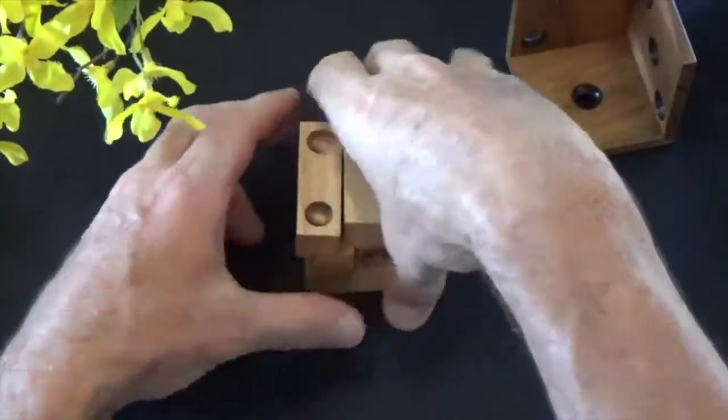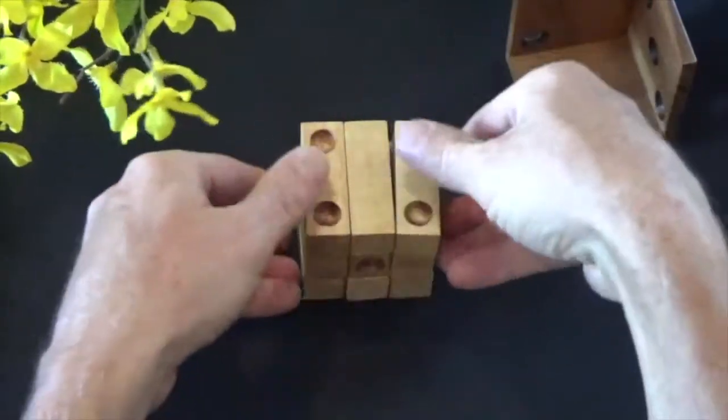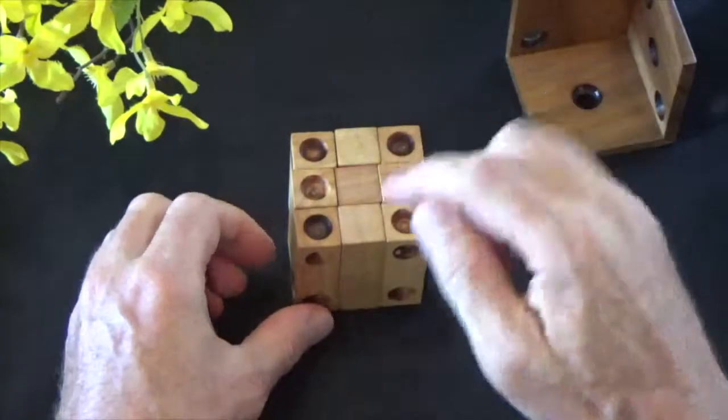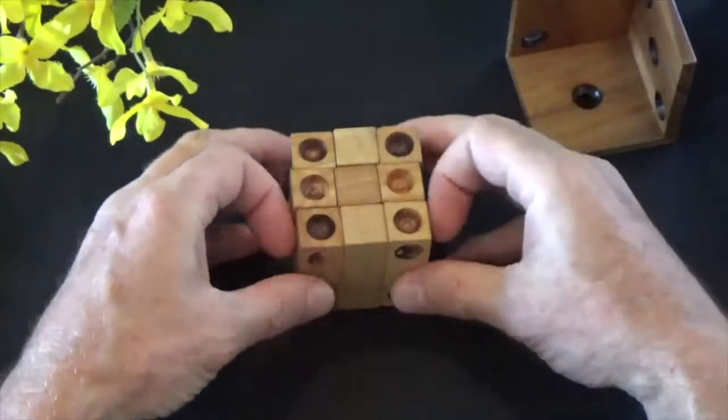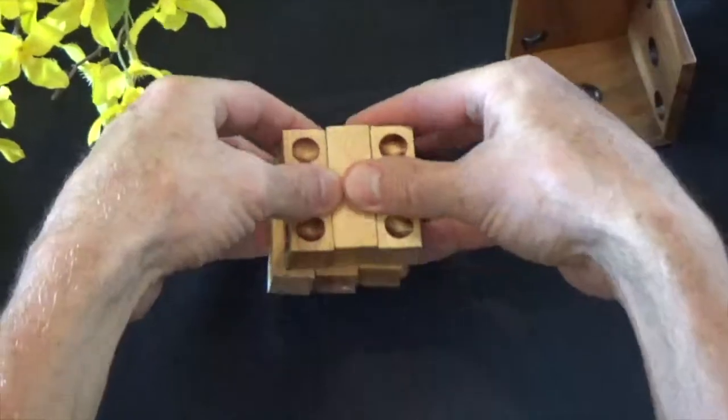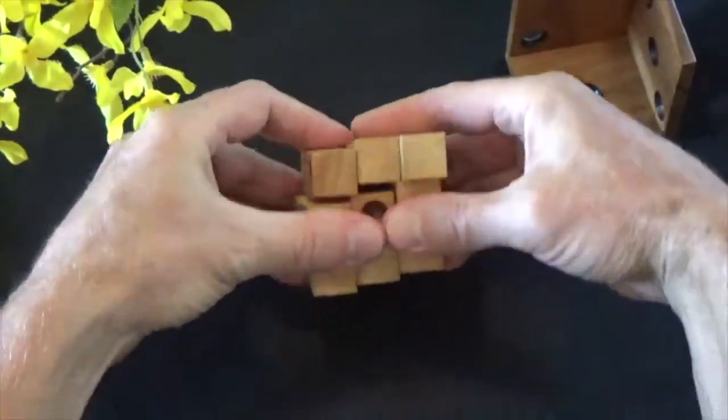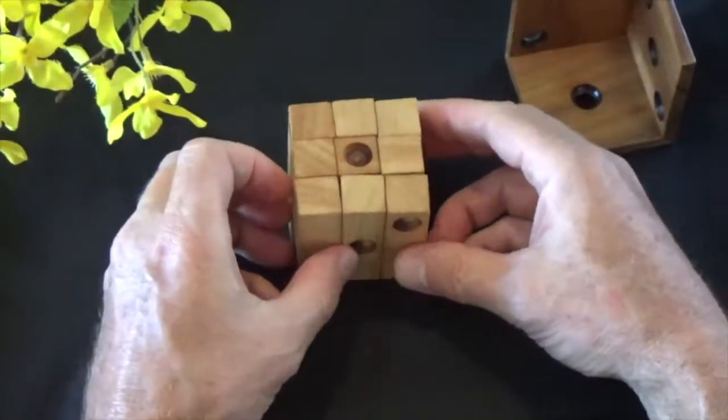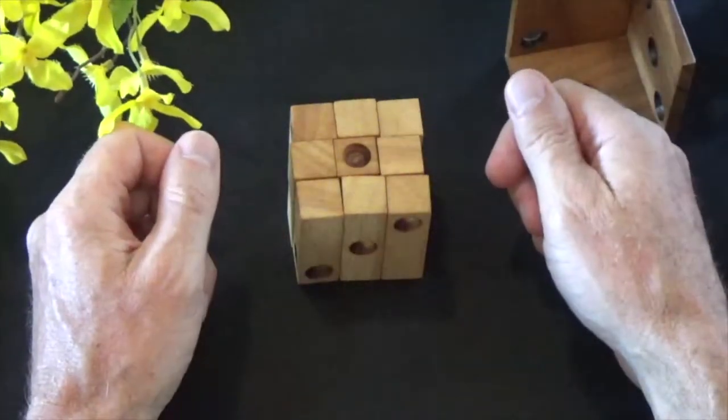If I turn it this direction. There's my six. So on the other side will be a one. So let me turn that over. There's the one. Six plus one is seven.